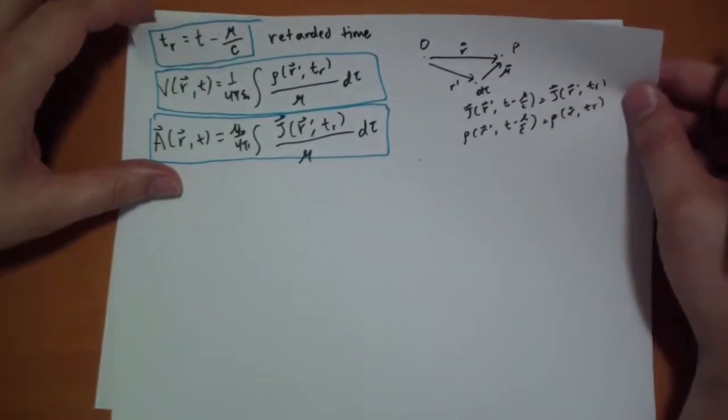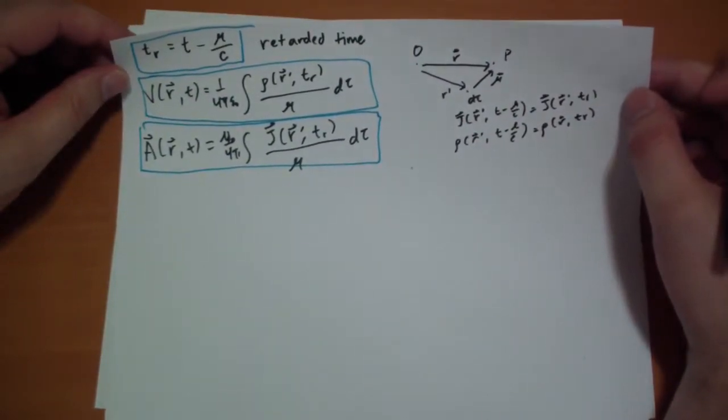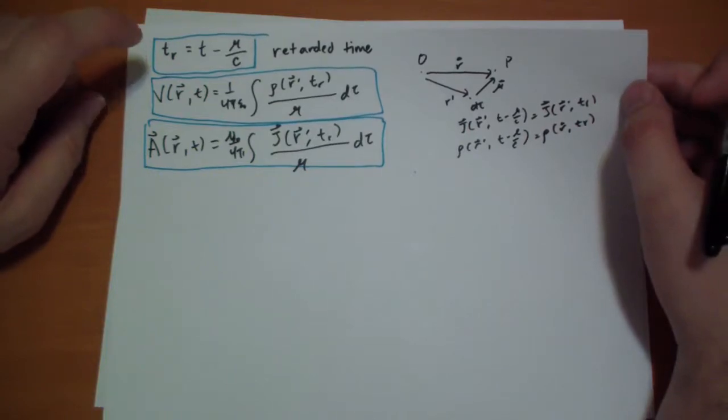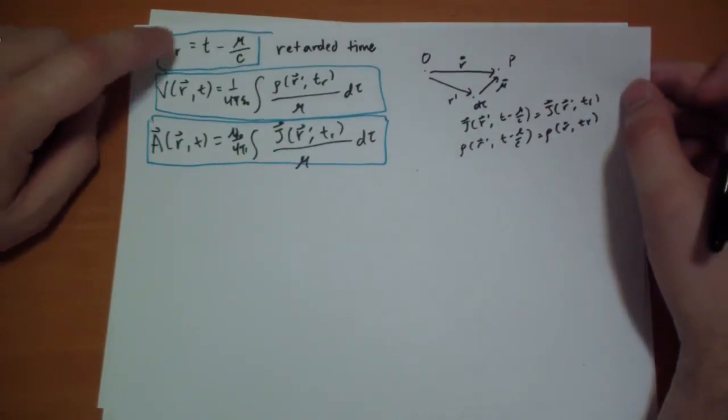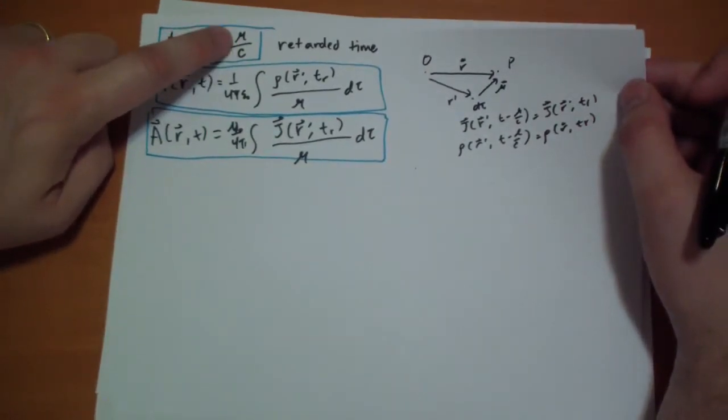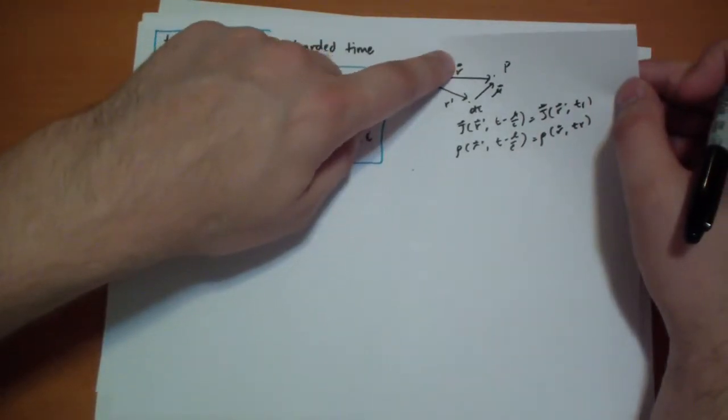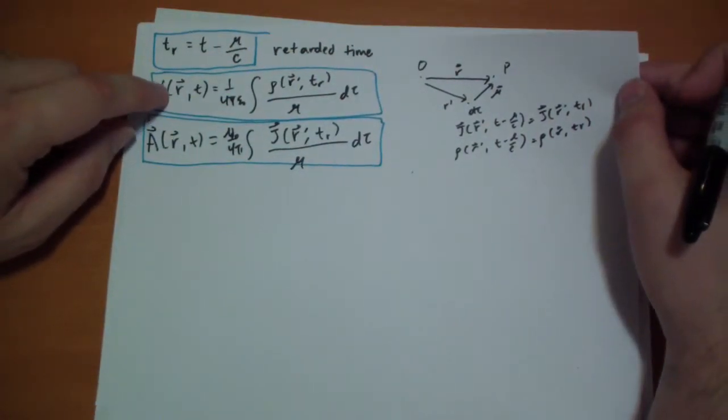Griffiths earns points for trying to give you simple problems, even though the math around it seems to be more difficult than it really is. So, these are the equations we have. We're using retarded time, which is t minus r over c. Remember, r is the difference between r minus r hat, right?